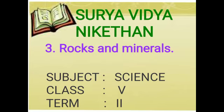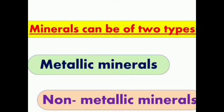Dear students, rocks are made up of minerals. Some minerals found in rocks are metallic and some are non-metallic. They are not made by humans. Minerals can be of two types: metallic minerals and non-metallic minerals. Let us have a look at these two minerals in detail.